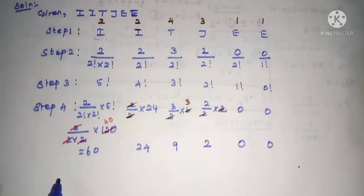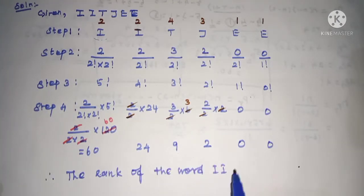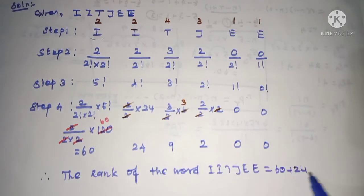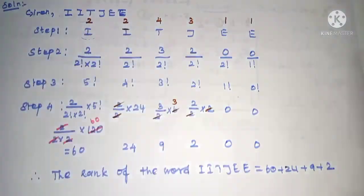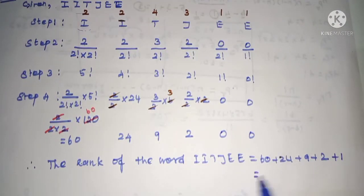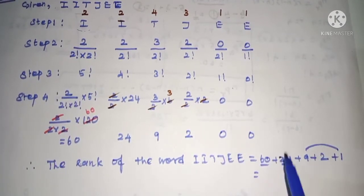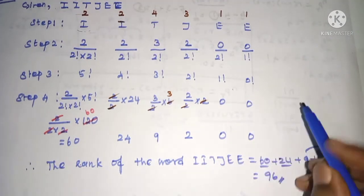Now sum. Therefore, the rank of the word IITJEE is equal to 60 plus 24 plus 9 plus 2. In the entire word we have arrangement. Now total add. 84, see, add 10, 10 plus 84 plus 2 equals 96. So the rank of the word IITJEE is 96. See, this method we use.